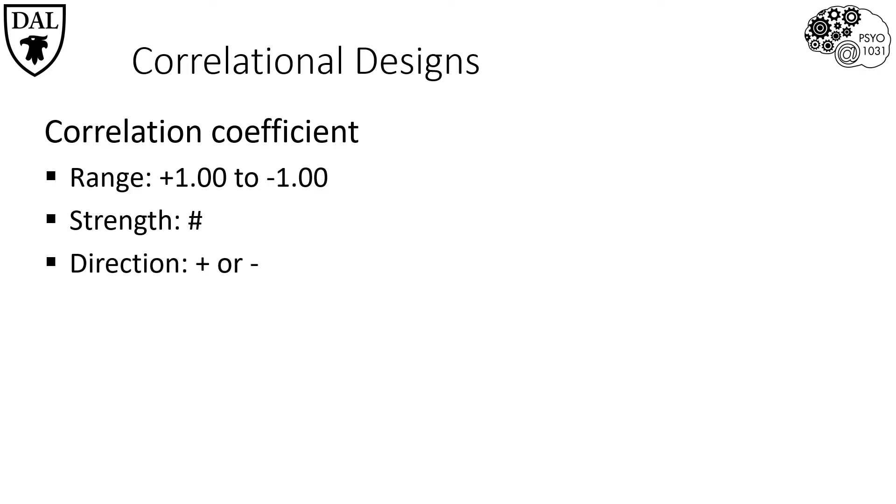The positive or negative of the correlation coefficient tells us the direction of the relationship. If it's positive, it means that as the values of one variable increases or decreases, then the second variable also increases or decreases in the same manner.